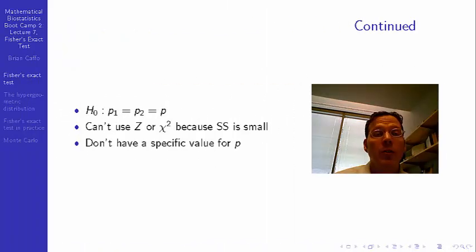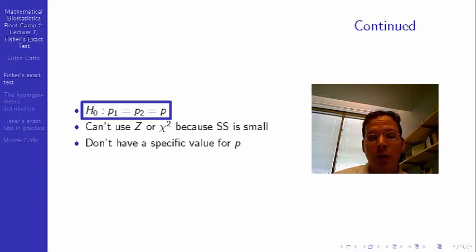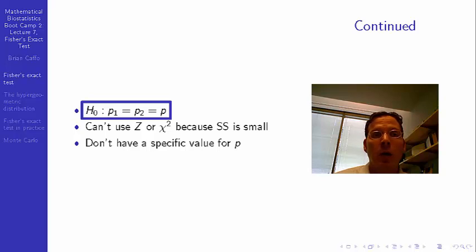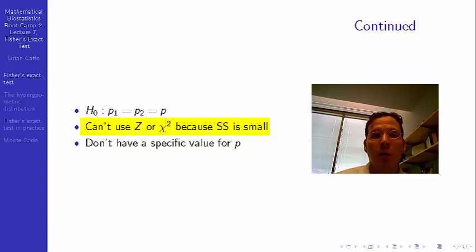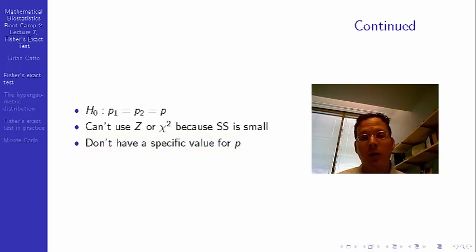Now, imagine we want to test that P1 equals P2, where P1 is the probability a treated mouse has a tumor and P2 is the probability a control mouse has a tumor. The null hypothesis is that these are equal, with a common proportion P. We can't use a normal distribution or chi-squared test because the sample size is small. Also, we don't have a specific value of P—which the chi-squared and z-test handle via asymptotics—but we want a small sample distribution, and constructing one is hard because we don't know P.